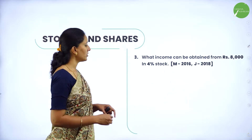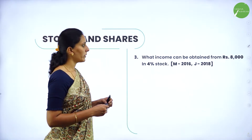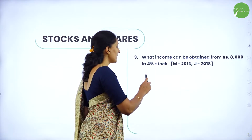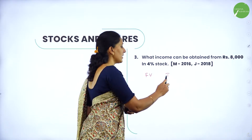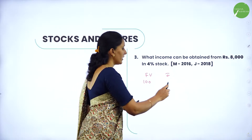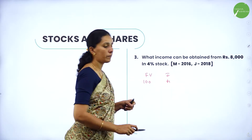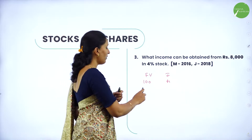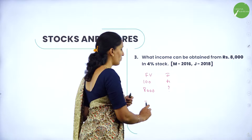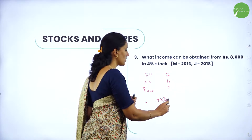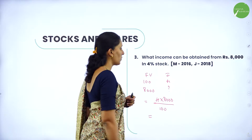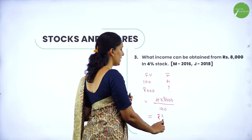Next question: what income can be obtained from Rs.8000 in 4% stock? If the face value is Rs.100, the income obtained is Rs.4. If the amount is Rs.8000, then income is 4 × 8000 / 100, which equals Rs.320.